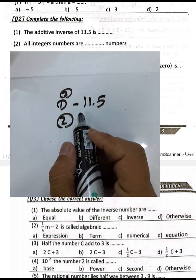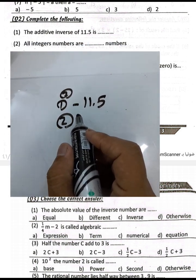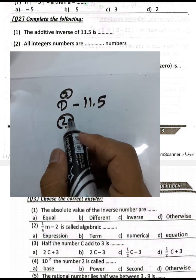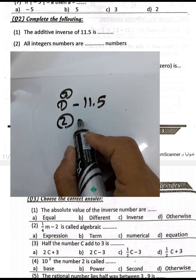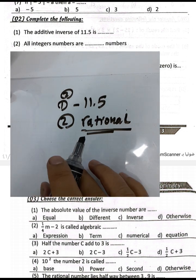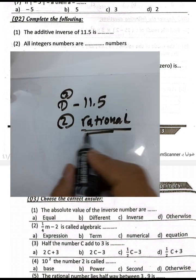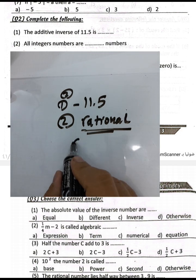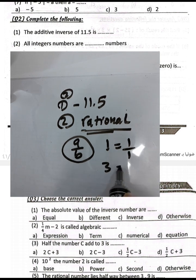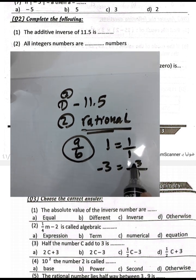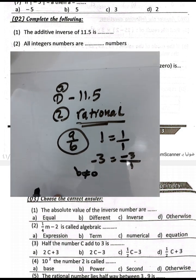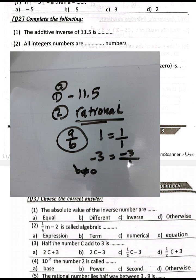Number two: are all integers rational numbers or not? All integers are rational numbers because any integer can be written in the form p over q. For example, one equals one over one, three equals three over one, and negative three equals negative three over one, where q is not equal to zero.